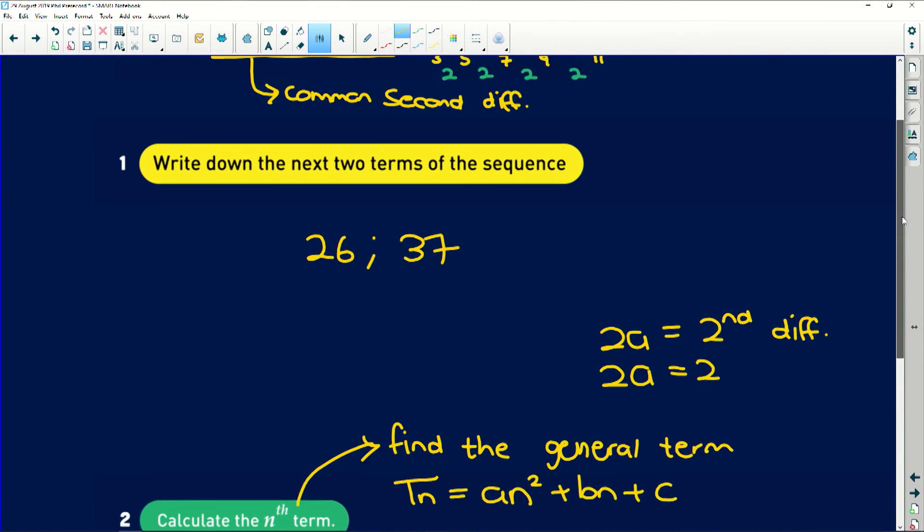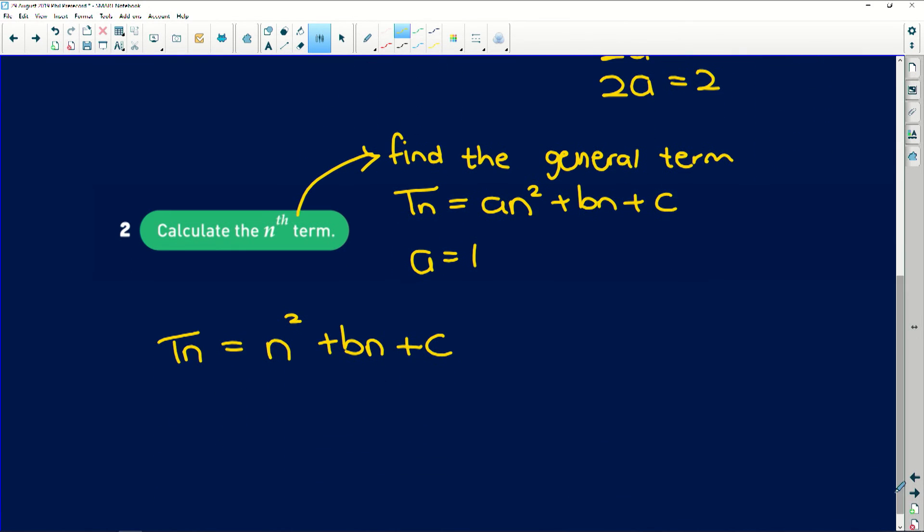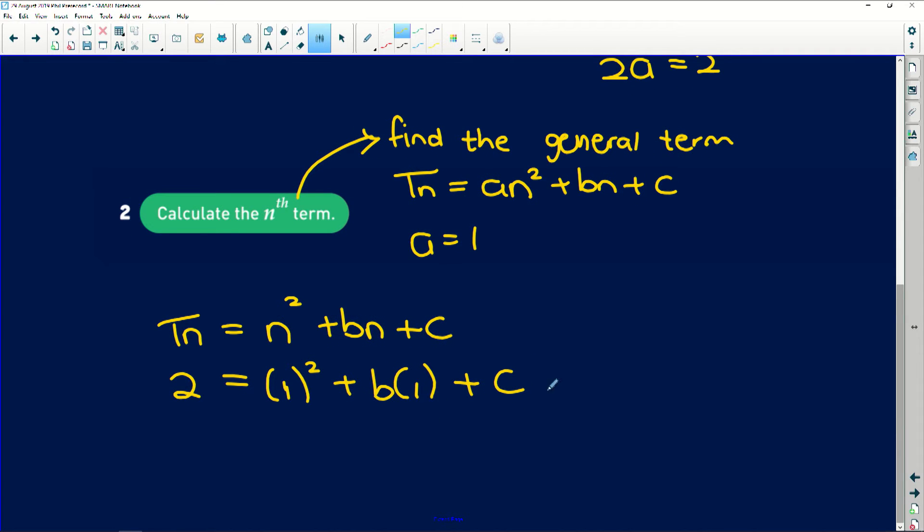So now let's look at term 1. Term 1 has the value of 2. So we say that 2 equals, and we substitute 1 into n because it is term 1. So we say 1² + b(1) + c. So now let's manipulate this equation. I'm going to get it in terms of c. 2 minus 1² is just 1. 2 minus 1 is 1 and you take the b over to that side and it becomes a negative. So c is equal to 1 minus b and that is our first equation in our simultaneous equations.